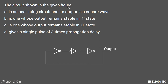The question is about the circuit shown in the given figure. We have two NOT gates: the first gate and the third gate are NOT gates, and the second gate is a buffer with a bubbled input. Option A is an oscillating circuit whose output is a square wave, option B is one whose output remains stable in one state, option C is one whose output remains stable in zero state, and option D gives a single pulse of three times the propagation delay.